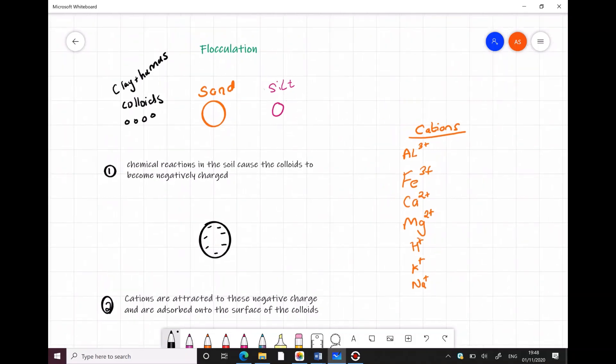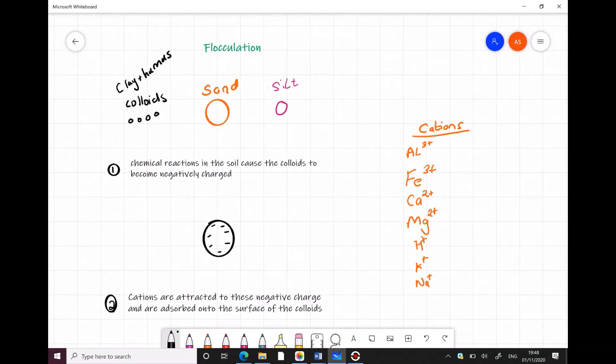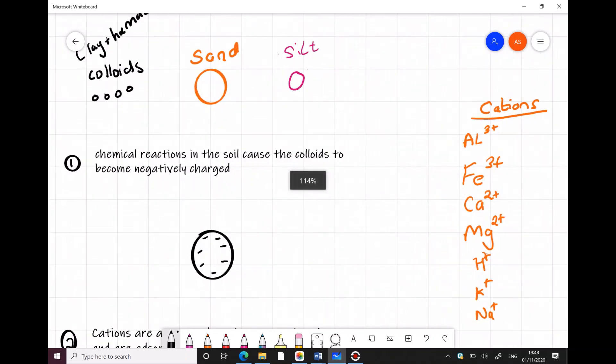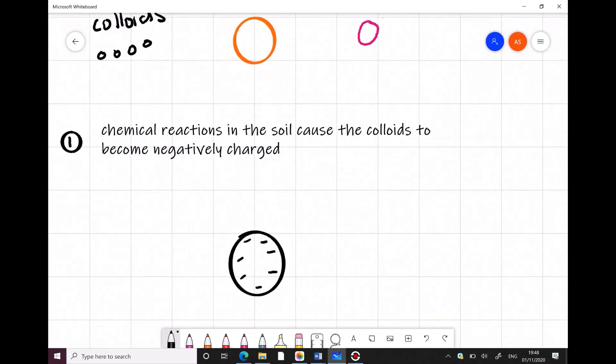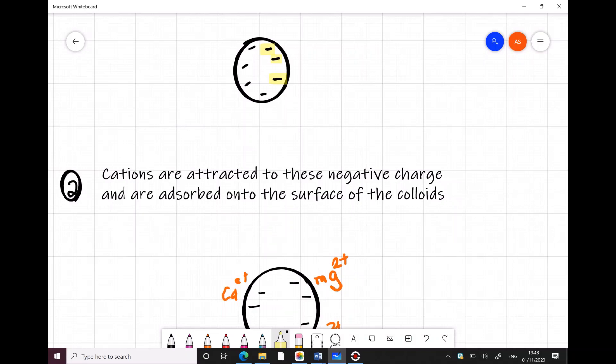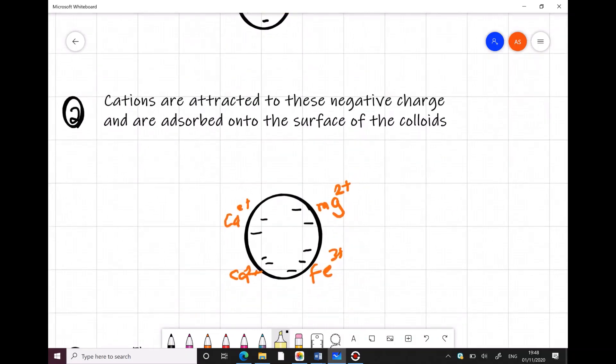So just to start the process of flocculation, we're going to take the smallest particles. We're going to take the colloidal clay and the colloidal humus. And what happens to those is there's chemical reactions in the soil cause these colloids to become negatively charged. And here you can see that I already have included the negative charges on the colloid.